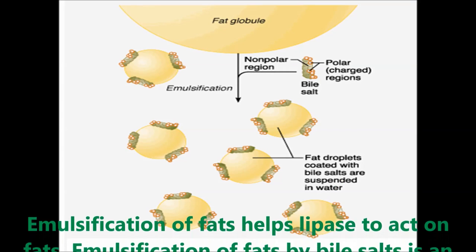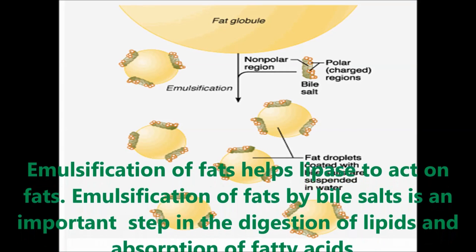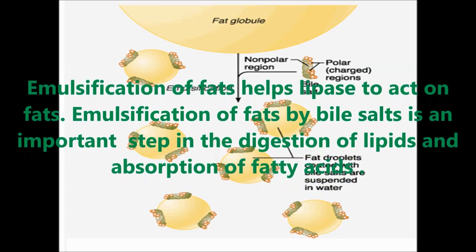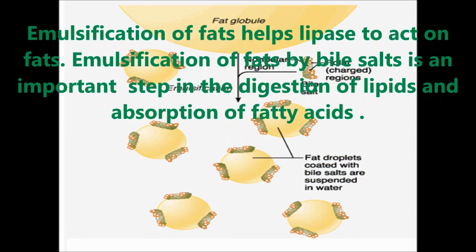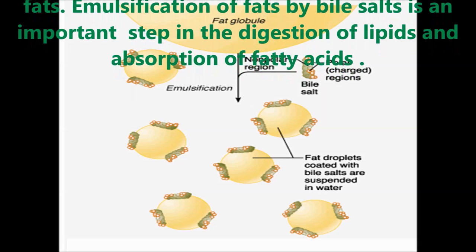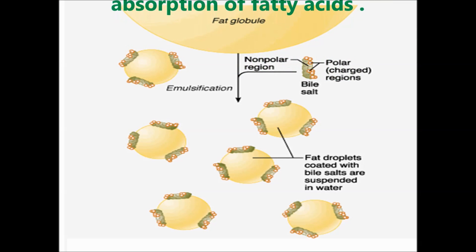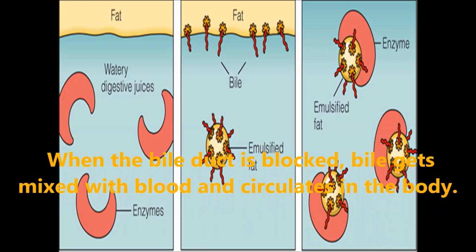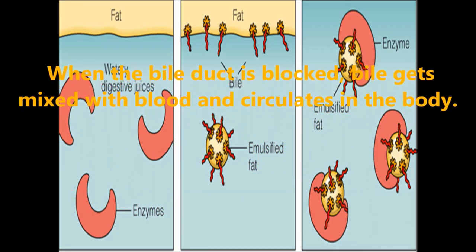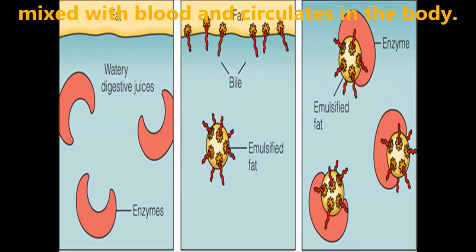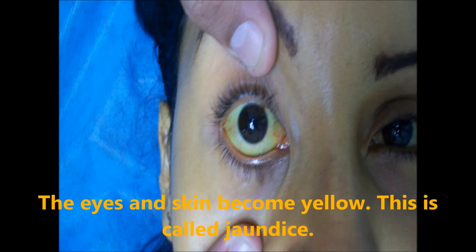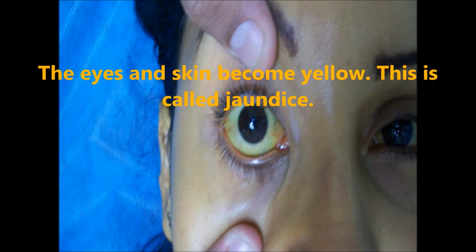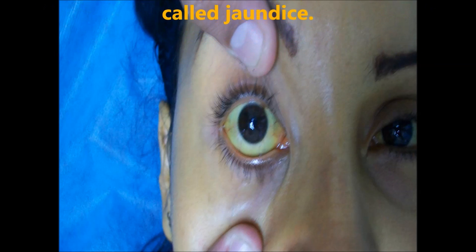The emulsification of fats helps lipase to act on fats. The emulsification of fats by bile salts is an important step in the digestion of lipids and absorption of fatty acids. When the bile duct is blocked, bile gets mixed with blood and circulates in the blood, causing the eyes and skin to become yellow — this condition is called jaundice.